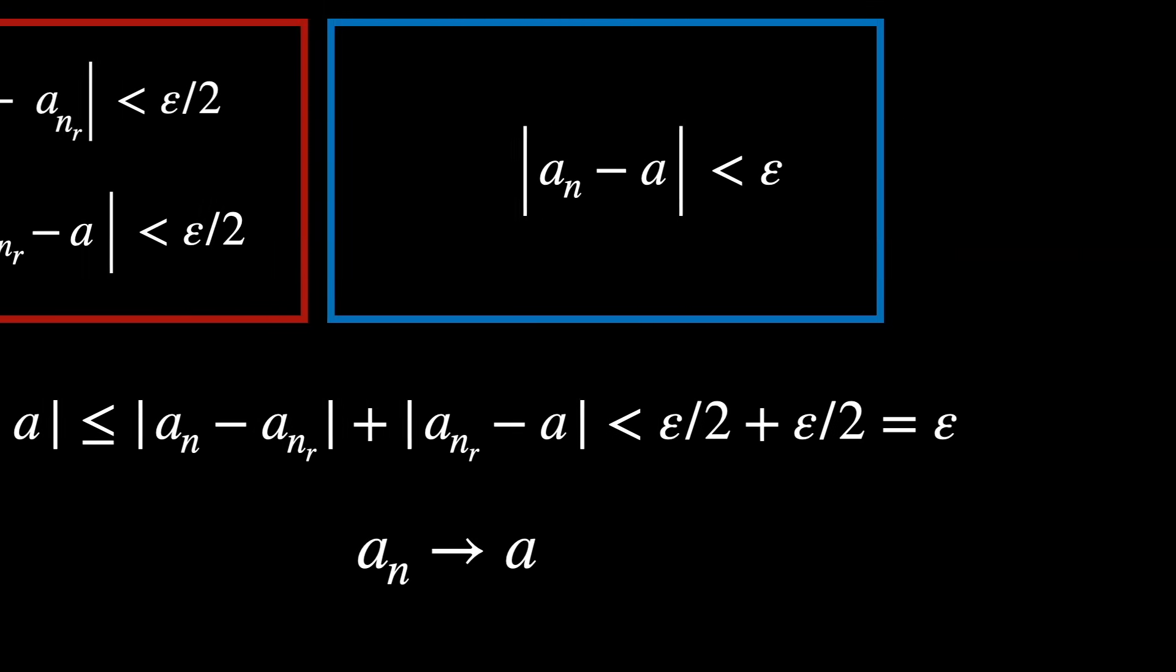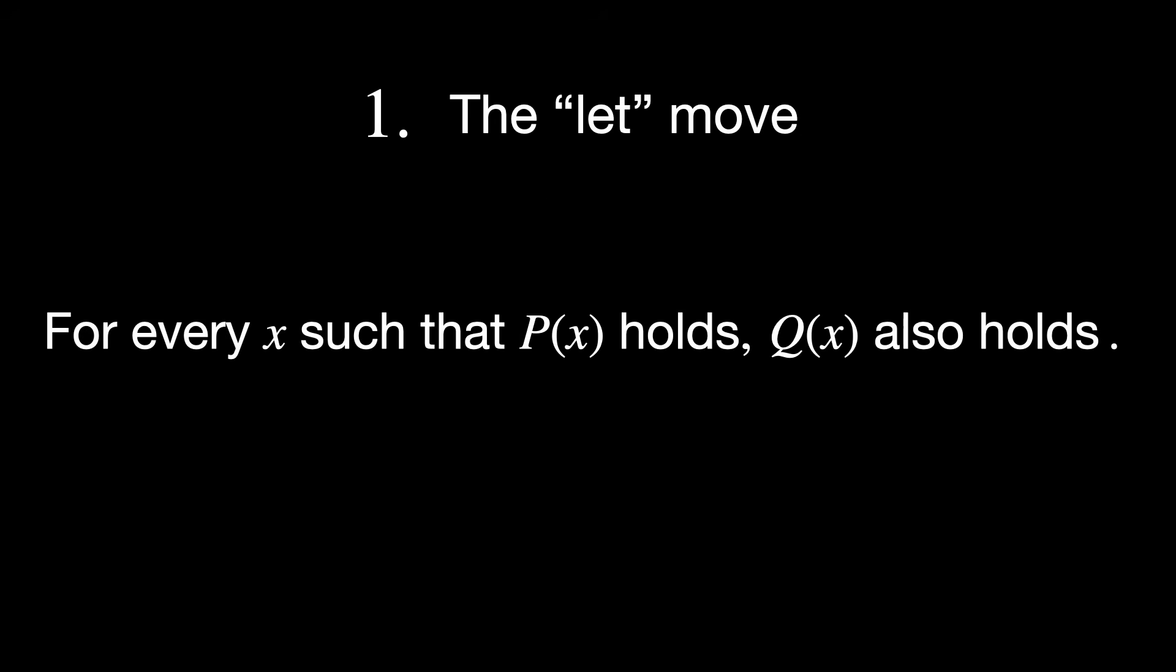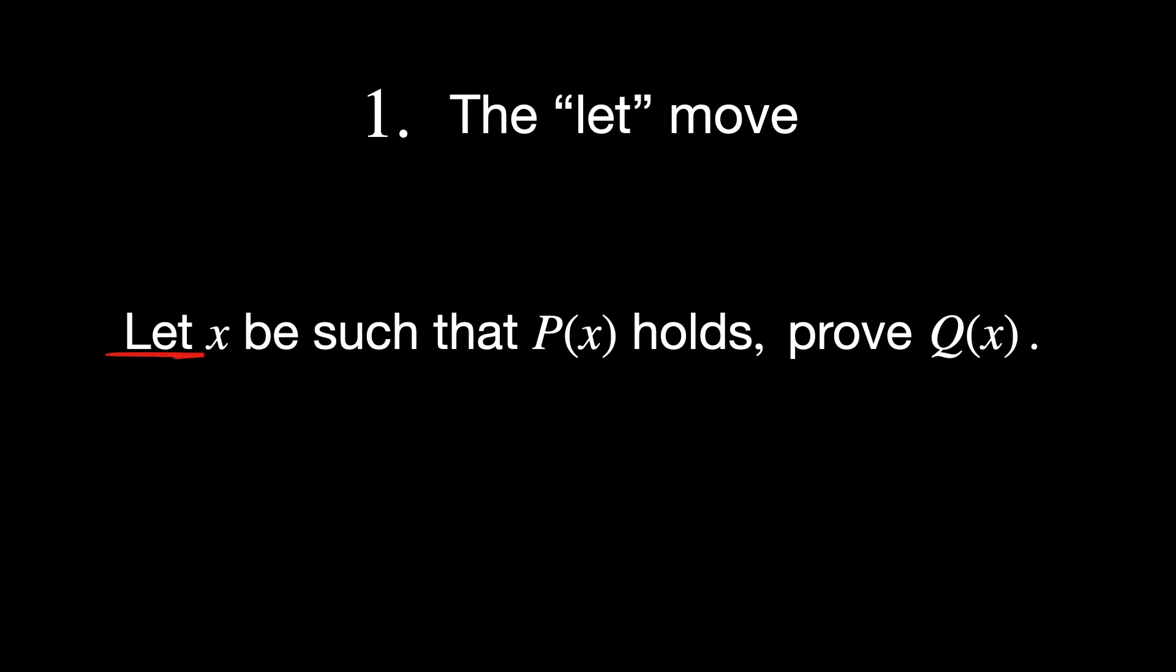Now let's recap all the moves we've used to get here. The let move. When you are trying to prove something like for every x such that P(x), we have Q(x), you let x be some object satisfying P(x) and then shift your target to proving Q(x). This simplifies the proof step by step.